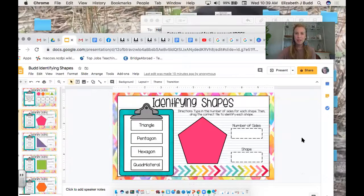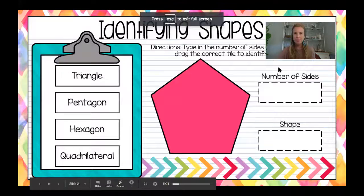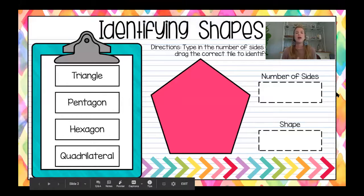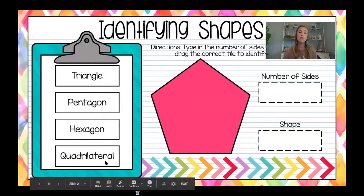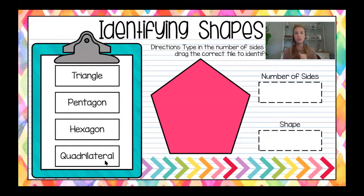Today we're going to do a little review to make sure you're familiar with these shapes before we start getting into more challenging things. Make sure you have something to write on and write with. We're going to get started identifying shapes — it's going to be kind of like a little quiz. You have answer choices on the clipboard we can choose from.